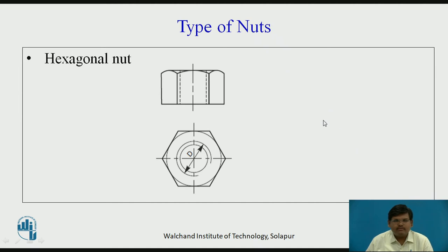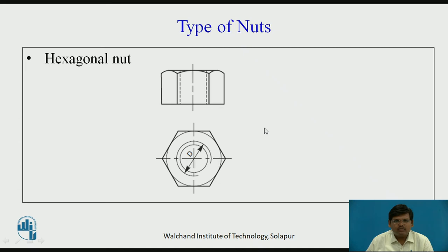Now coming to types of nuts. The first one is hexagonal nut. Hexagonal nut is the most widely preferred kind of nut. The reason is that with the help of a hexagonal nut, in a one-sixth rotation of the spanner the nut can be moved — it can be tightened or loosened. This is the benefit of using a hexagonal nut.